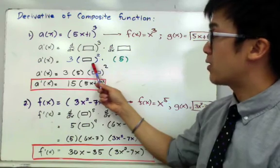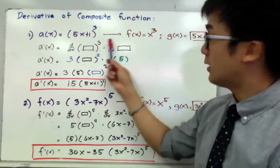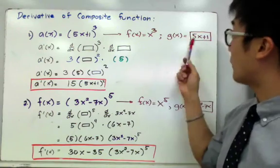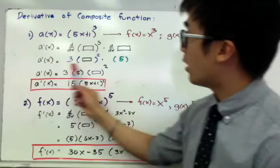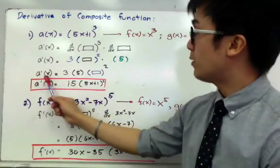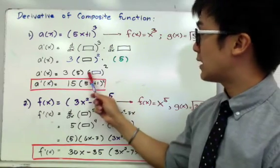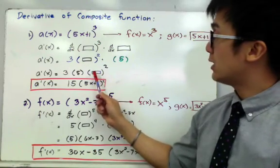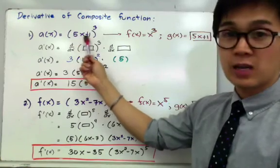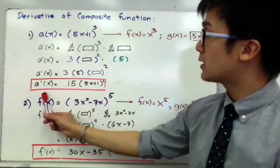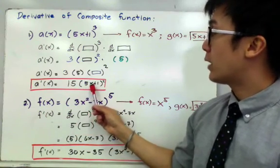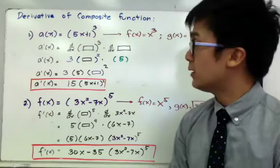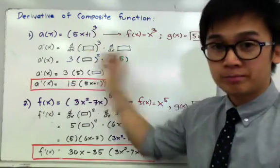So we have 3 times the parenthesis squared, times the derivative of the inside, g(x) = 5x+1, whose derivative is simply 5. Putting it all together and simplifying, a′(x) = 3 × 5 × (parenthesis)². The box in the illustration represents g(x), the inside function. Therefore, a′(x) = 15(5x+1)². That is how we use the chain rule to find the derivative of a function raised to a power.